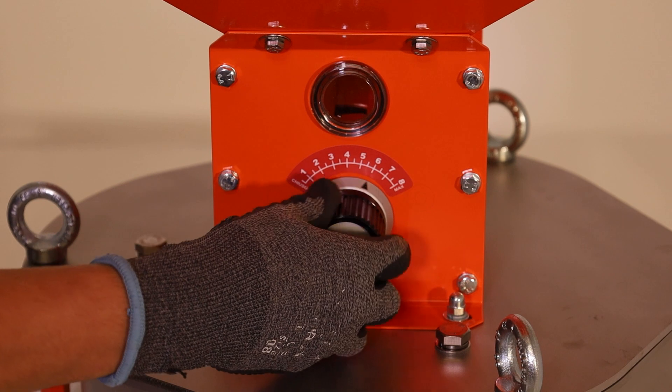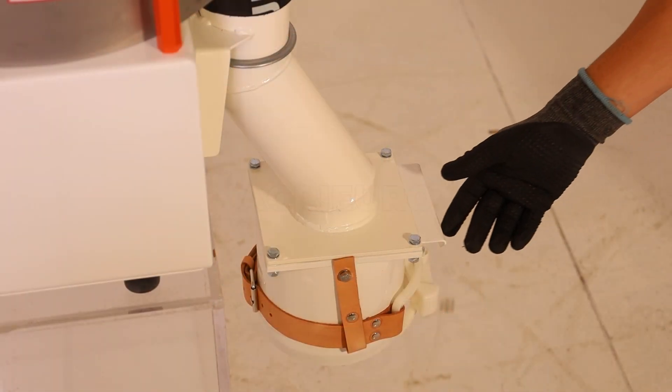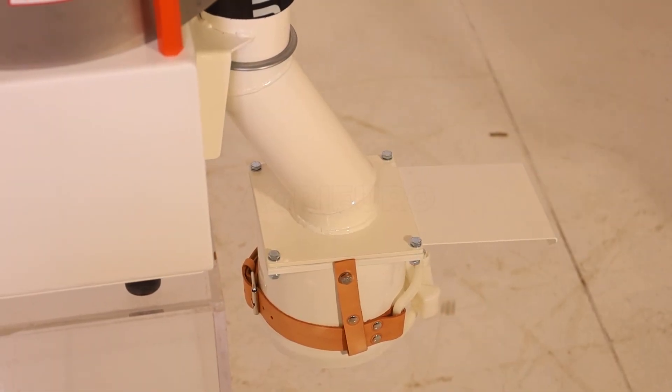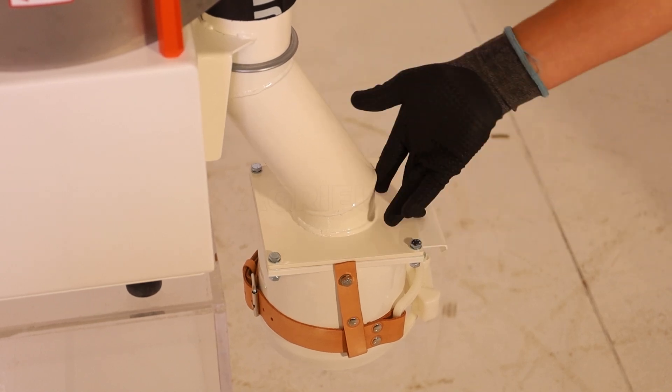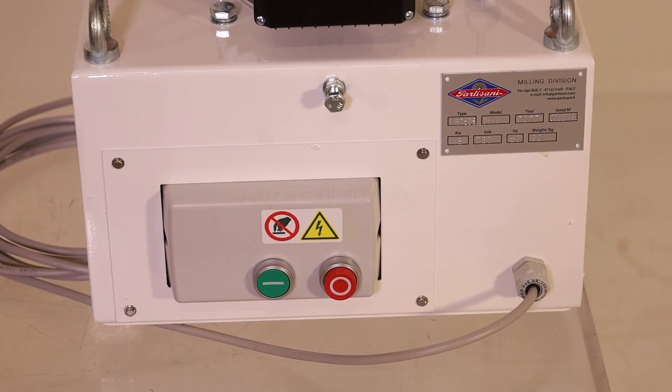La struttura del mulino Partisani MB250S risulta resistente e funzionale, offrendo non solo un processo di macinazione impeccabile ma anche un design strutturale d'avanguardia.